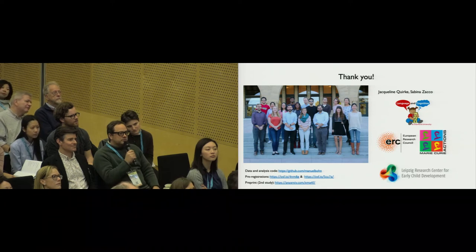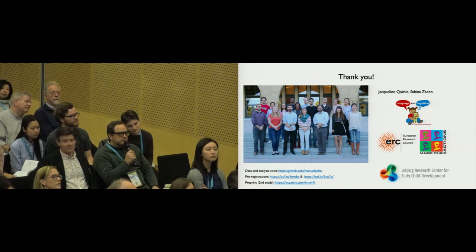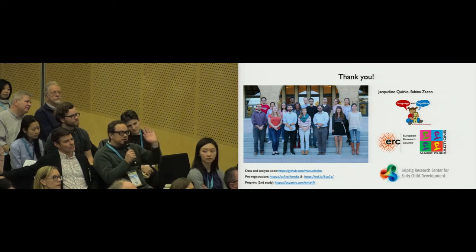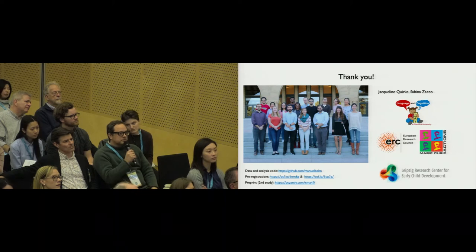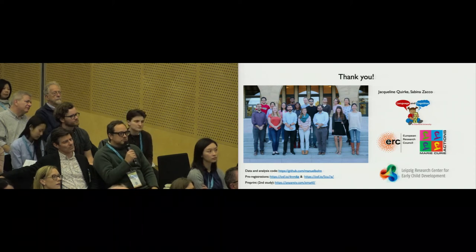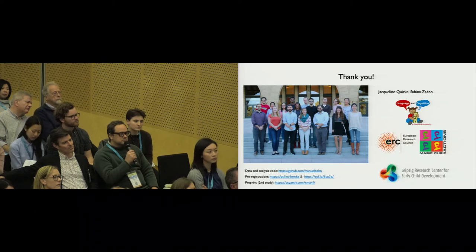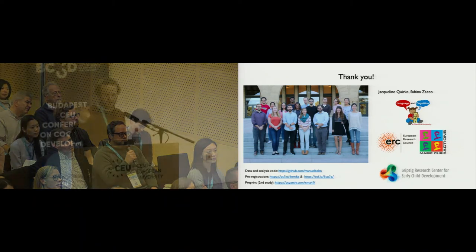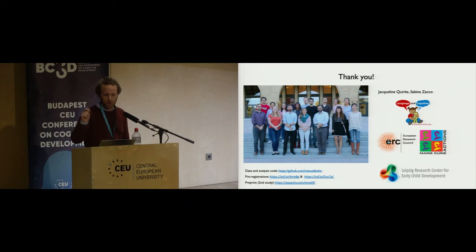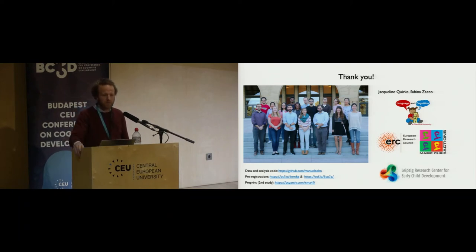The model prediction is a probability — we don't flip the coin. For model comparison, we compare the probability that the model generates for a child of a particular age, with a particular item, for a particular condition — we take the model's predicted proportion and compare it to whether or not the child actually chose it, yes or no. That's how we evaluate the models.